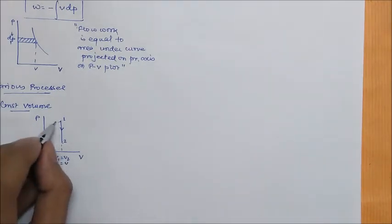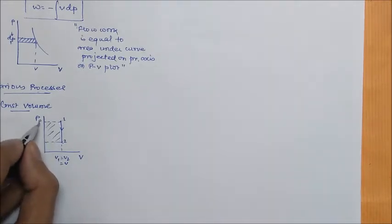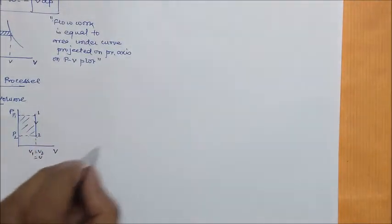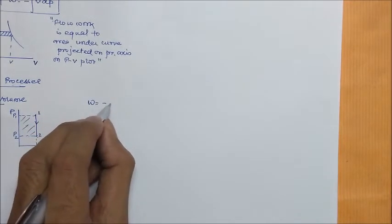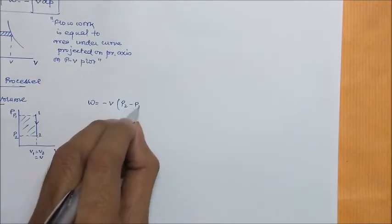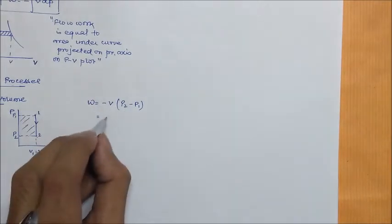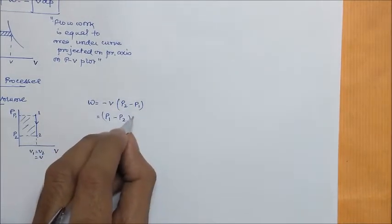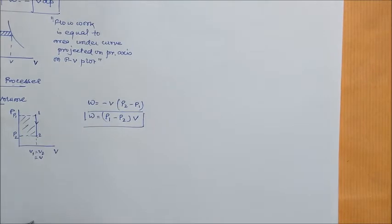Volume is constant and when we project this on the pressure axis, the area under this will provide us the work done for open system. The work done is given by minus v(p2 minus p1), which becomes (p1 minus p2) times v. This is the work done for constant volume process.